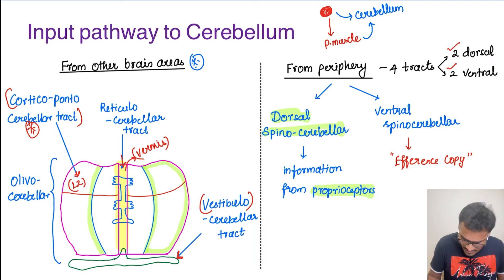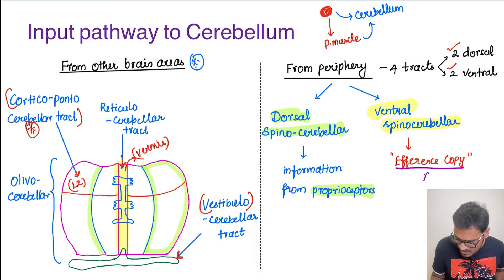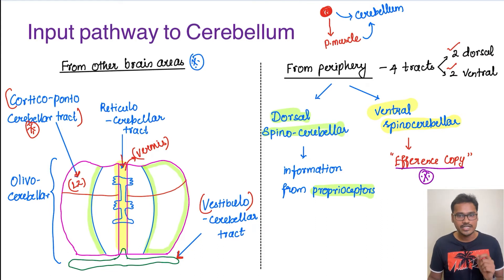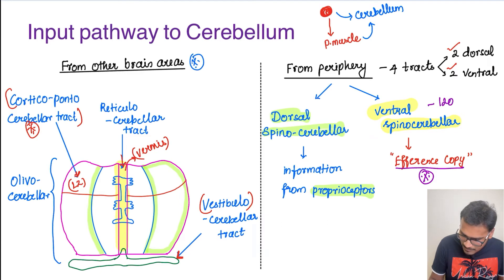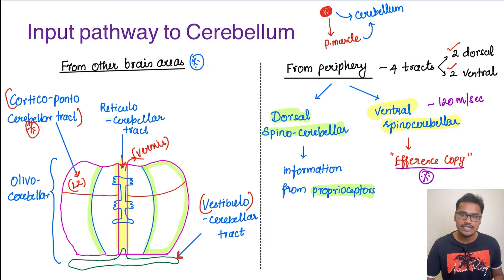The ventral spino-cerebellar tract is the most important tract for sending ongoing information directly to the cerebellum to compare with the blueprint given by the cortex. It sends an efference copy — a constant copy of ongoing information — to the cerebellum. This ventral spino-cerebellar tract is the fastest tract in the body, with a speed of around 120 meters per second, which is approximately 432 kilometers per hour. That is why whenever any action is performed and there is even a minor error, the cerebellum immediately tries to correct it.